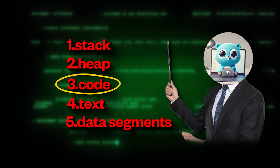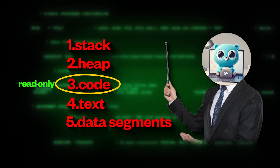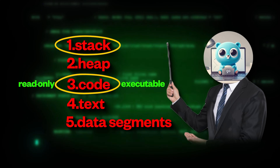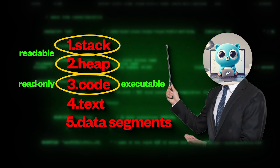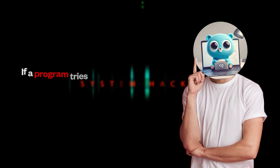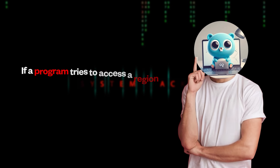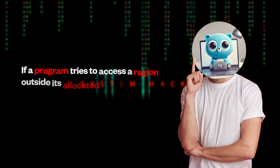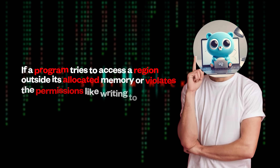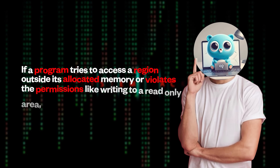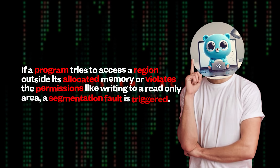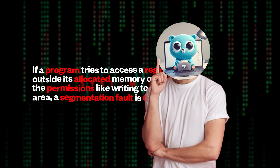For instance, the code segment is typically read-only and executable, while the stack and heap are readable and writable. If a program tries to access a region outside its allocated memory, or violates the permissions — like writing to a read-only area — a segmentation fault is triggered.